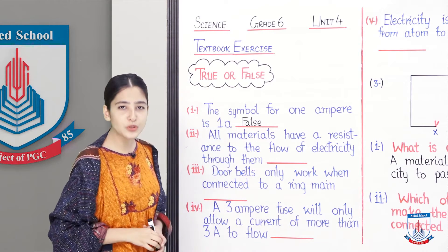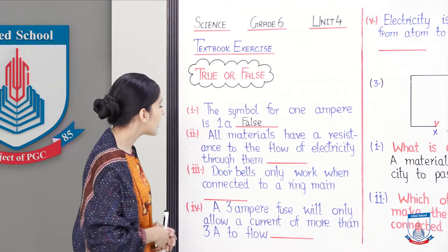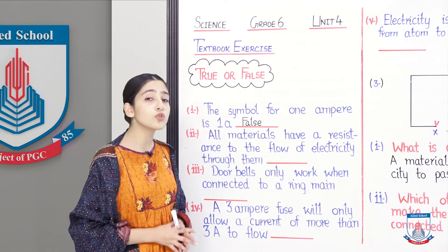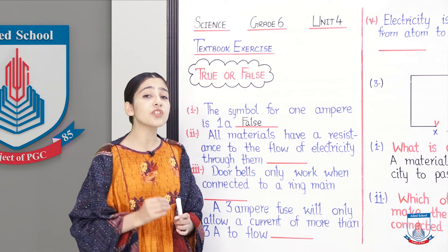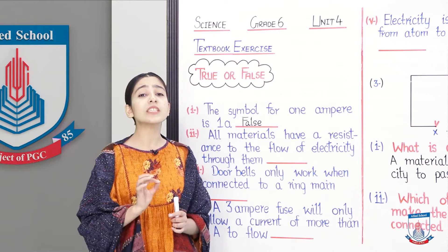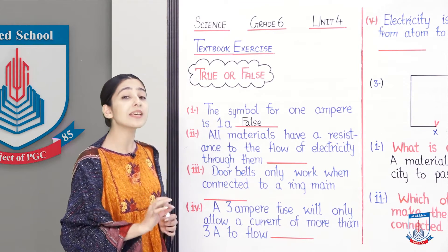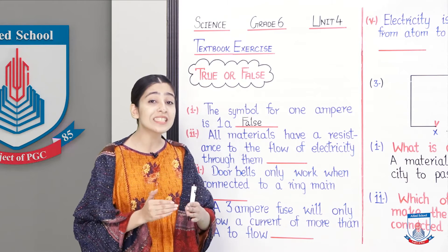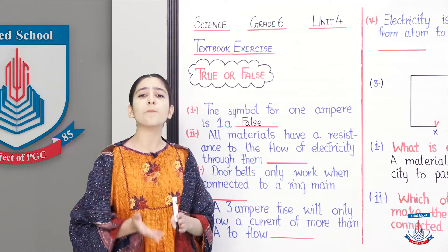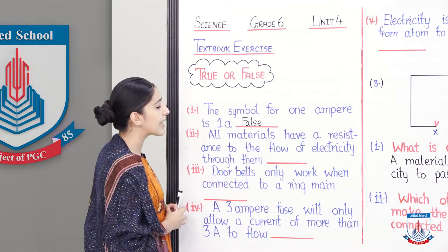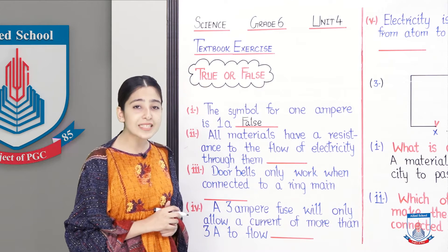Moving towards statement number two. All materials have a resistance to the flow of electricity through them. Jitne bhi hamare paas materials maujud hain, unke andar maujud hoti hai resistance against the flow of electricity. Woh apne andar se jo electricity flow hone denge, uski ek limit hai. Isko kehte hain resistance. All materials have a resistance, unho resist karte hain to the flow of electricity. Toh aap iske answer mein likhenge true.